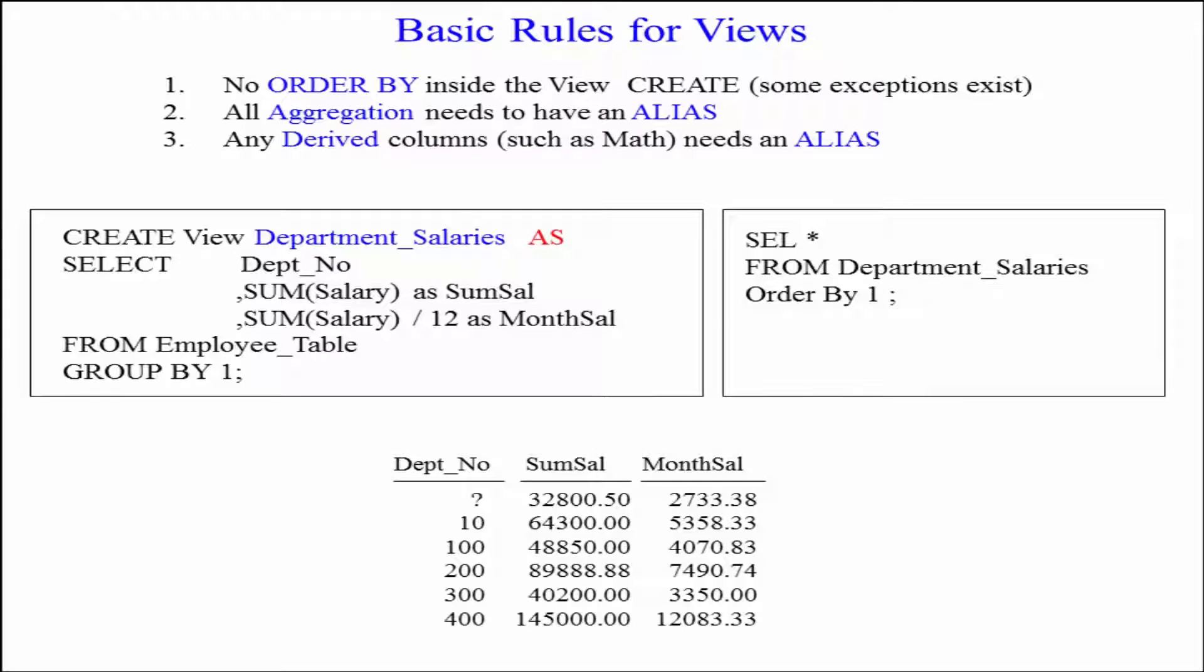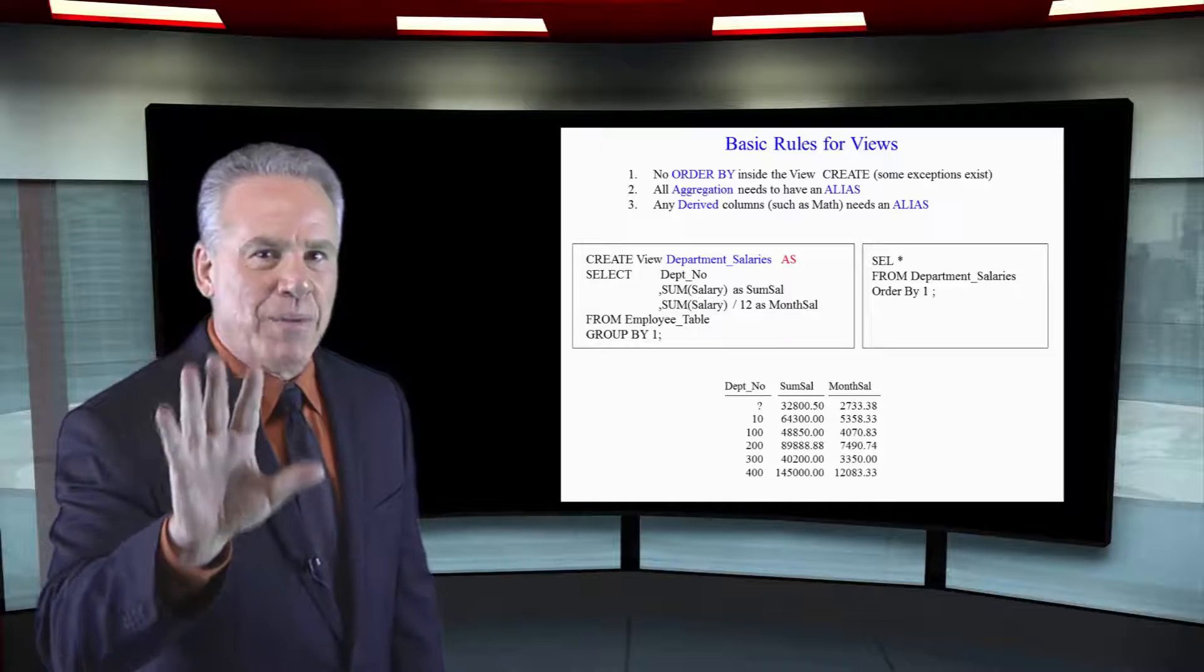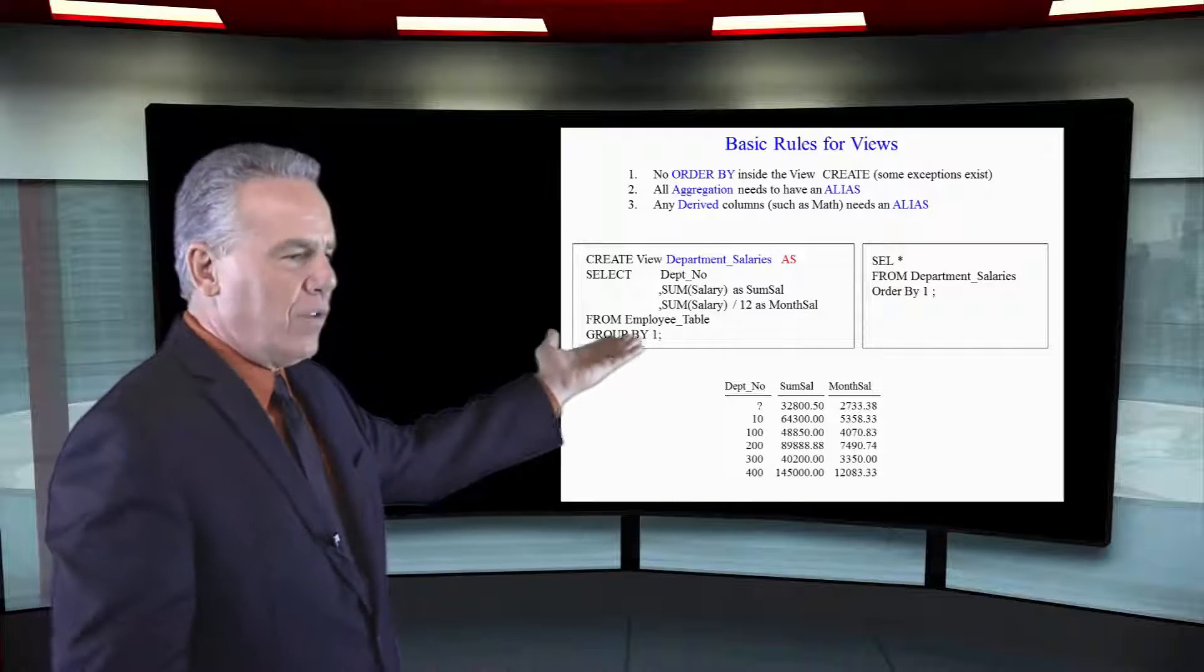First of all, we create the view department_salaries as, select the department number. We don't have to give that an alias because it's not an aggregate or calculation. It's an actual column. And then we say, I want to sum the salary as sum_sal. That's an aggregation, needs an aliased column name. Sum the salary divided by 12. Now we're actually combining both the aggregation and some derived portion of that. That's also going to need some type of alias there. And now the view is created.